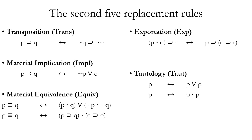Material implication allows you to go from a horseshoe to a wedge — from a conditional to a disjunction — or vice versa. However, the antecedent must match the first disjunct except to have one fewer negation, and the consequent must match the second disjunct.